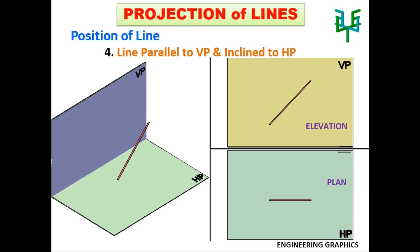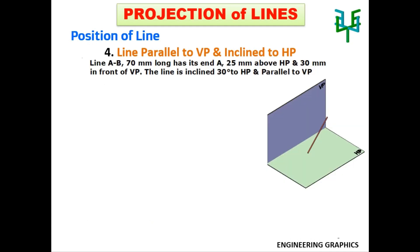The next case is line inclined to HP and parallel to VP. Since the line is parallel to VP, the elevation will have true length. The line is inclined to HP, so this inclination can also be seen in the elevation. Take a problem: A line AB, 70mm long, has its end A 25mm above HP and 30mm in front of VP. The line is 30 degrees inclined to HP and parallel to VP.